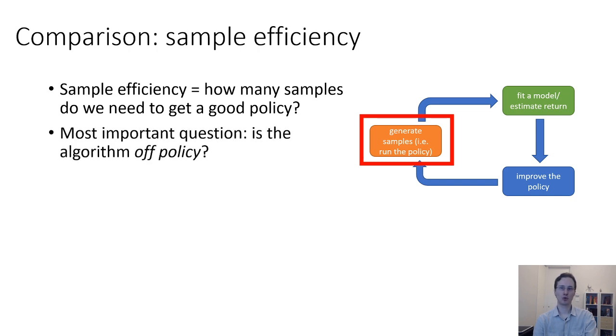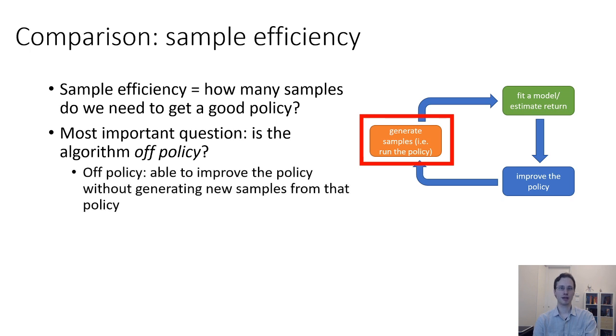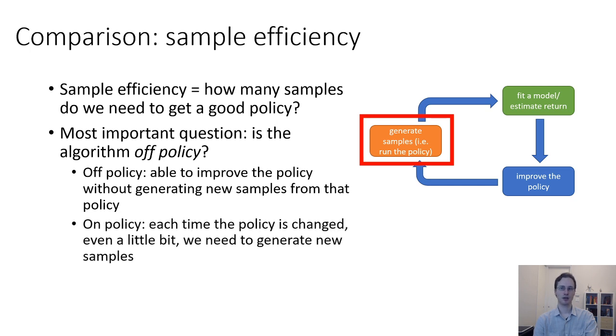One of the most important questions in determining the sample efficiency of an algorithm is whether the algorithm is what's called an off-policy algorithm or not. An off-policy algorithm is an algorithm that can improve the policy by using previously collected samples. An on-policy algorithm has to throw out all of its samples each time the policy changes, even a little bit, and generate new samples.